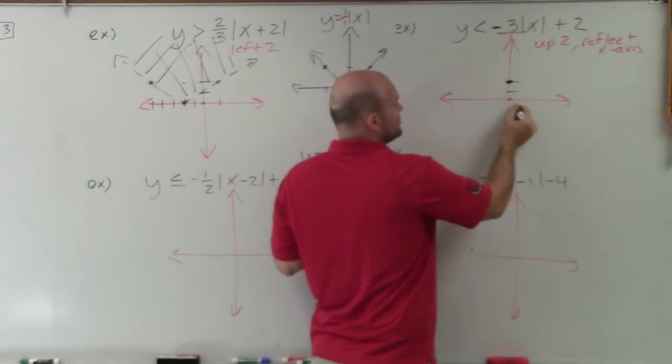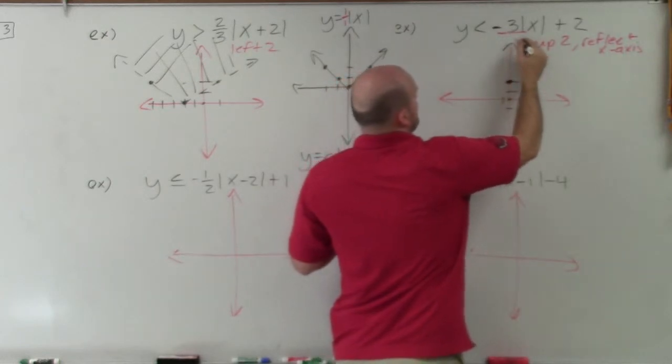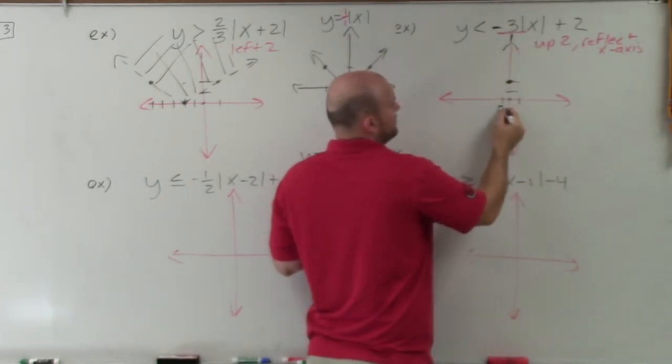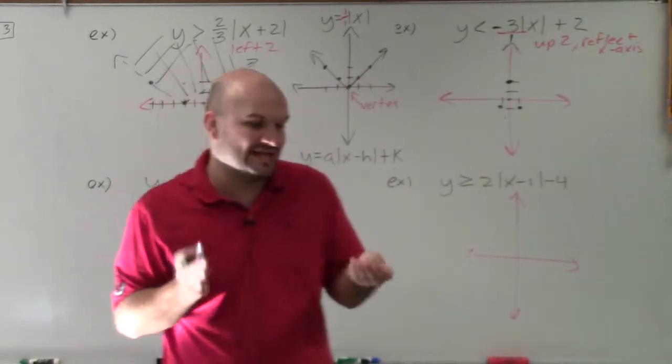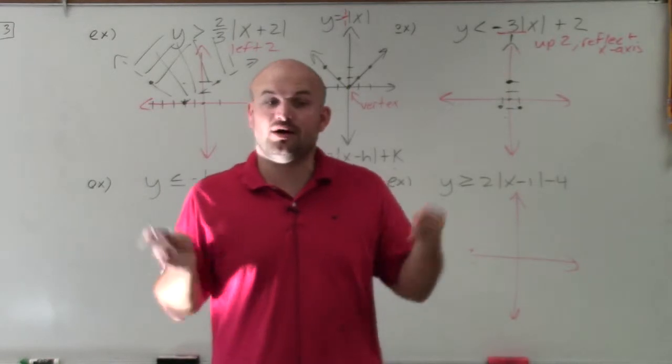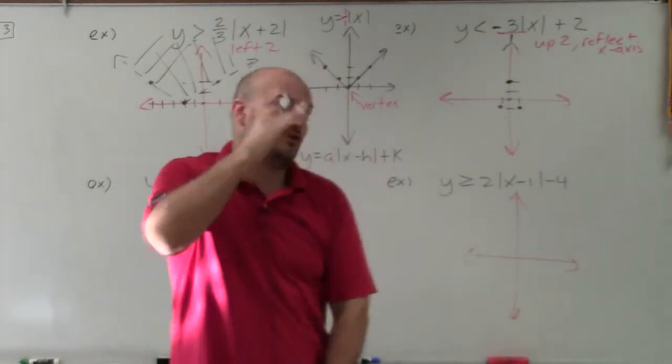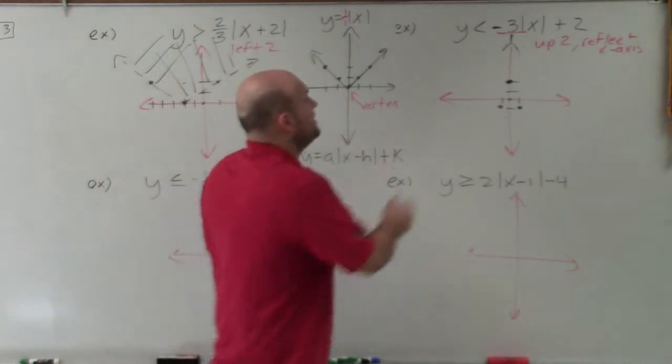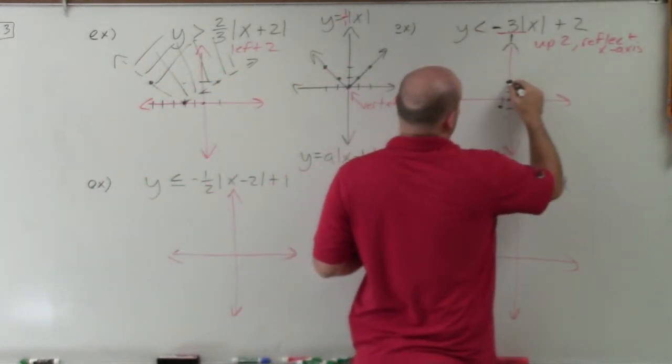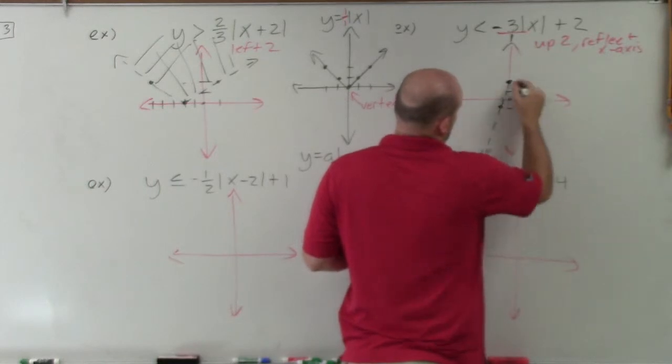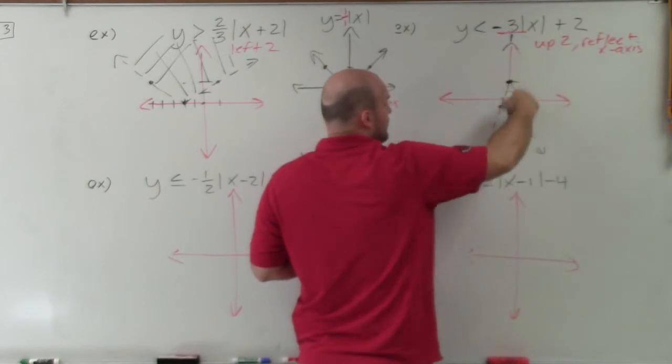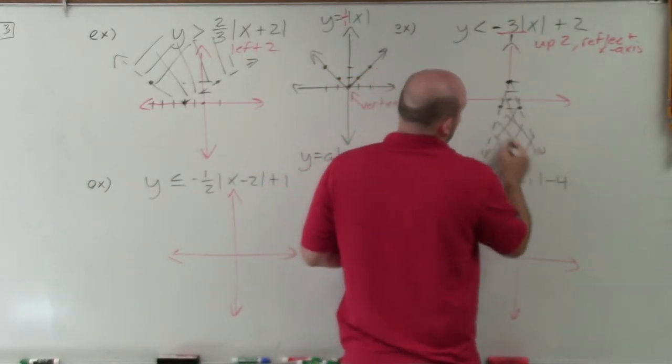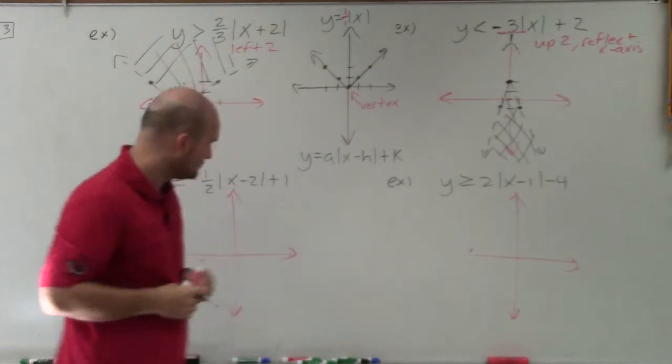This is reflected. So instead of going up and over, I'm now going to go down and over. My slope is 3 over 1. So I'm going to go from 2, which is my new vertex. I'm going to go down 3, 1, 2, 3, and then over 1 and left 1. When the absolute value of a is greater than 1, that's going to be horizontally compressing your graph or vertically stretching it. So this is going to be much skinnier. It's less than, so that is going to be a dashed line, and it's for all points that are less than the graph, so it's going to be the y-coordinates below my boundary line.